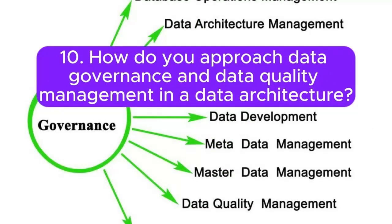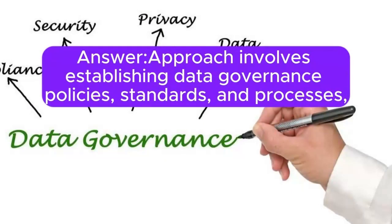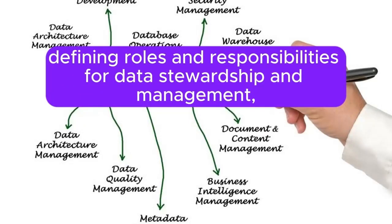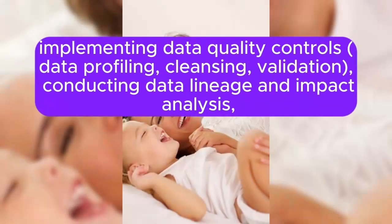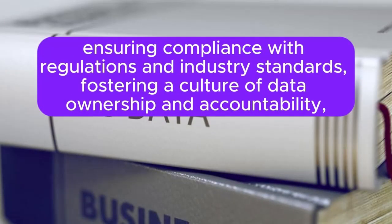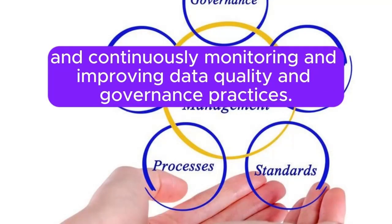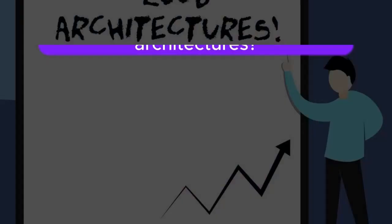Question 10: How do you approach data governance and data quality management in a data architecture? The approach involves establishing data governance policies, standards, and processes, defining roles and responsibilities for data stewardship and management, implementing data quality controls such as data profiling, cleansing, and validation, conducting data lineage and impact analysis, ensuring compliance with regulations and industry standards, fostering a culture of data ownership and accountability, and continuously monitoring and improving data quality and governance practices.